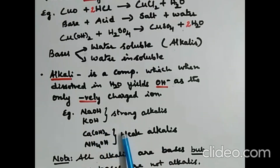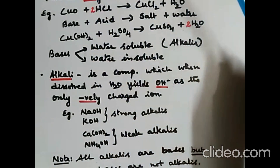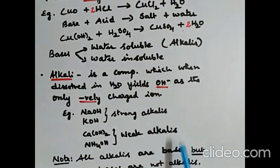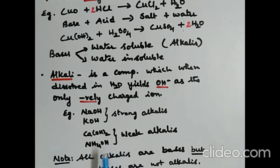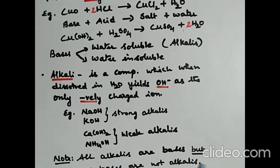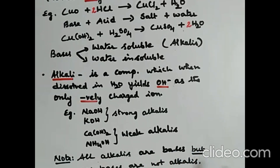The definition of a base states oxides and hydroxides of metals. But ammonium hydroxide is an exception here — ammonium is an ion; though it is not a metal, its hydroxide is a base. Note — this is very important: all alkalis are bases, but all bases are not alkalis. All bases are not soluble in water; the ones which are soluble in water are called alkalis.